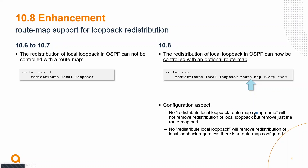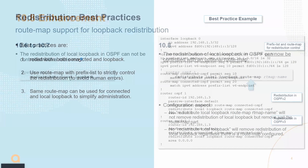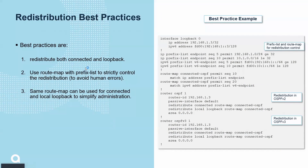In terms of configuration: if you do a no redistribute local loopback with the route-map name, it will not remove the redistribution of the loopback — it will only remove the applied route-map for that redistribution. If you do a no redistribute local loopback without the name, it will remove everything. As a best practice, here is a quick example of redistributing loopback with a control using a prefix list to avoid human errors.